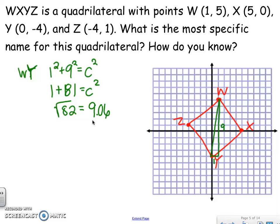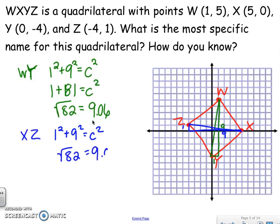Now I find the distance of XZ. I draw a right triangle that's really skinny, with one side of 1 and the other of 9 — notice they have opposite reciprocal slopes. So 1² + 9² = c² gives the same result: 9.06. I've proved that the diagonals are congruent.